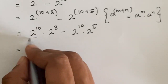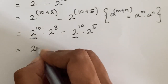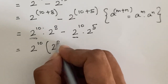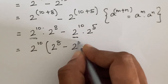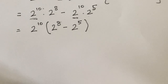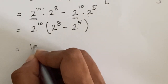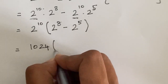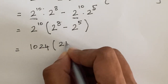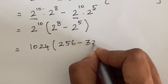Here we have 2 to the power 10 in common, so we take it out: 2 to the power 10 times the quantity 2 to the power 8 minus 2 to the power 5, which equals 1024 times 256 minus 32.